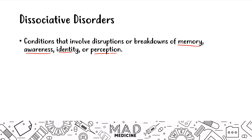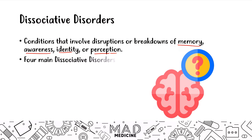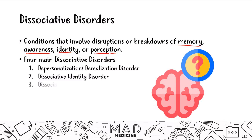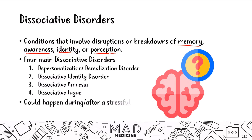There are four main dissociative conditions: depersonalization or derealization disorder, dissociative identity disorder, dissociative amnesia, and dissociative fugue. One thing to understand is that all four of these disorders can happen during or after a stressful event — that's completely normal and that's when they usually begin. A quintessential example would be someone who has gone through a traumatic experience like sexual assault. Many of those patients might have several of these disorders at once.